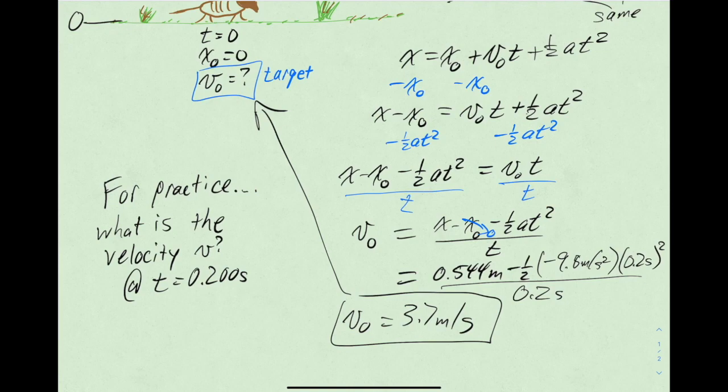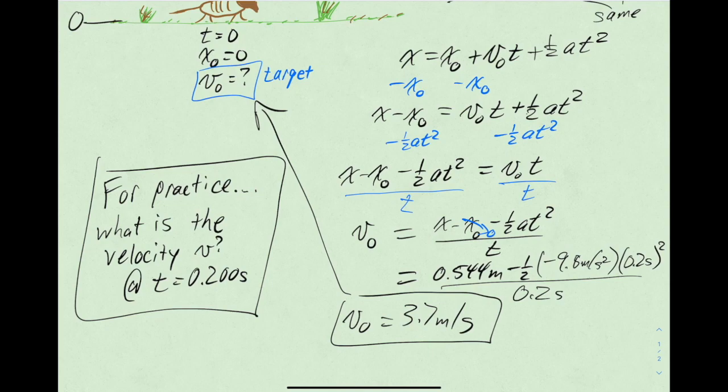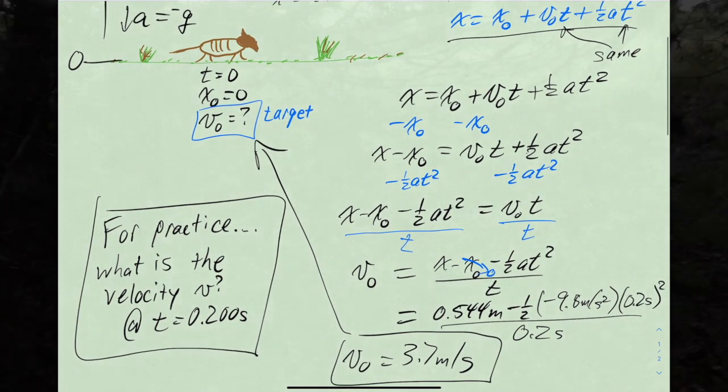So now for practice, I suggest that you calculate what is the velocity v, the other velocity in the problem, so that's the velocity that happens at time t = 0.2 seconds. And from that value, you'll be able to tell: is the armadillo still on its way up if the velocity is positive, is the armadillo at its maximum height if the velocity is equal to zero, or is the armadillo already on its way back down, which is if the velocity is negative.